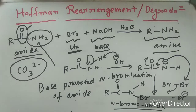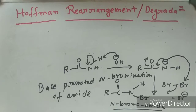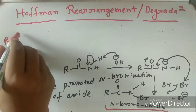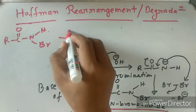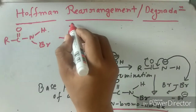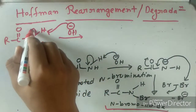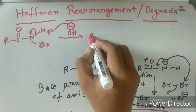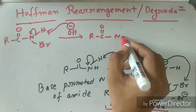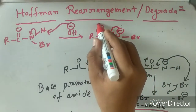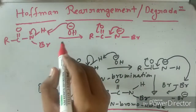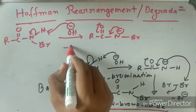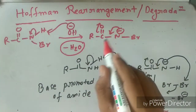Now let's talk about the second step. This N-bromoamide — R-CO-N with one hydrogen and one bromine — will react similarly: the base will attack the other hydrogen atom, and one more negative charge will form on the nitrogen atom. This product is also resonance stabilized. The base removes another proton from the system, forming water which leaves.